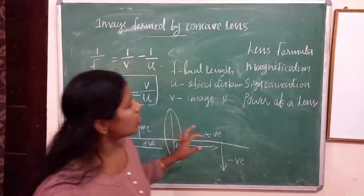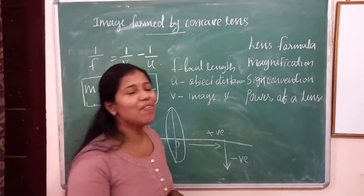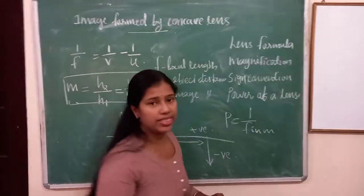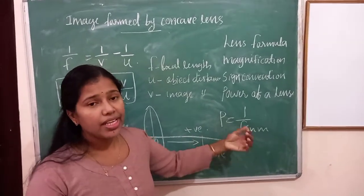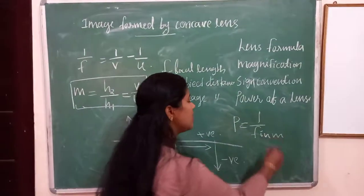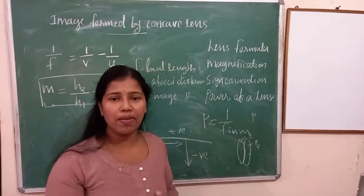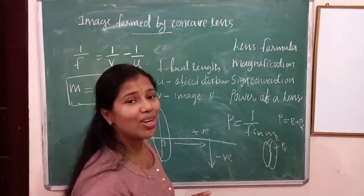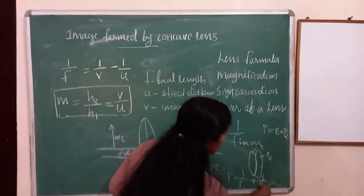Next topic is power of a lens. Power of a lens is defined as the reciprocal of focal length. We can write: power P is equal to 1 by f, where f is always considered in meters. If we have two lenses in contact, we get two powers — P1 for the first lens and P2 for the second lens. Total power P is equal to P1 plus P2. The combined focal length can be calculated from: P equals 1 by f1 plus 1 by f2.